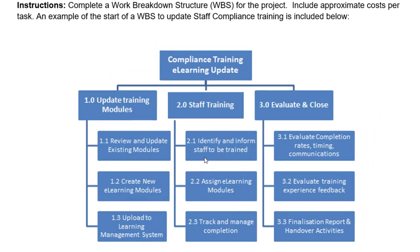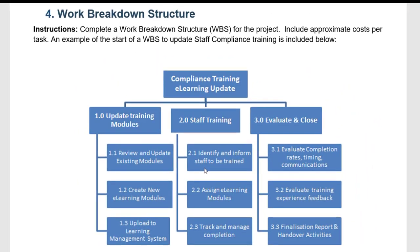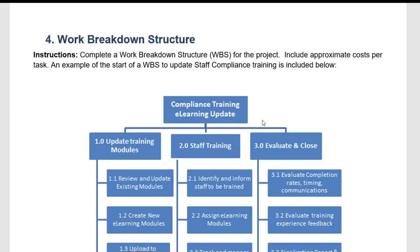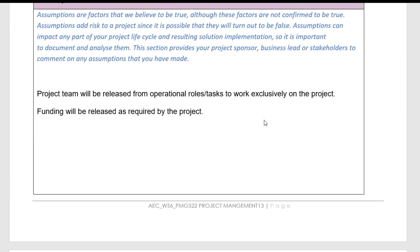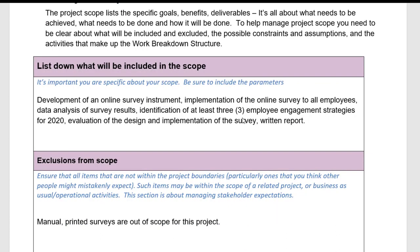Now we're going to look at how to develop a work breakdown structure for the example project we've been working on. Scrolling up, our project plan has this scope of work: develop an online survey instrument, implement it to all employees, do some data analysis, identify some strategies, evaluate and provide a written report. Typically we would develop the WBS early on, and then it helps us write the rest of the project plan. I have a template in PowerPoint and I'm using that.